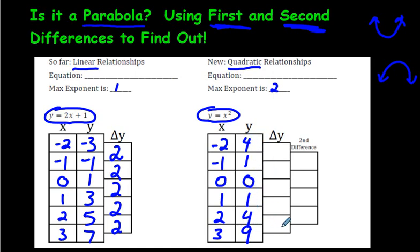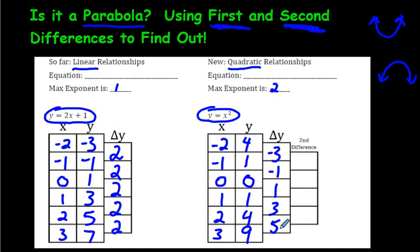Let's start with our first differences. Starting at the bottom and working our way up: 9 minus 4 is 5. 4 minus 1 is 3. 1 minus 0 is 1. 0 minus 1 is negative 1. And 1 minus 4 is negative 3. These numbers are not the same, therefore this is not a linear equation.